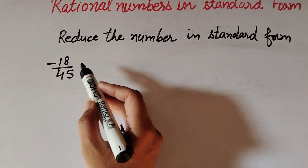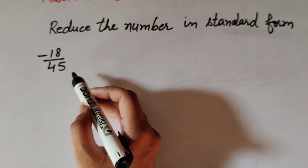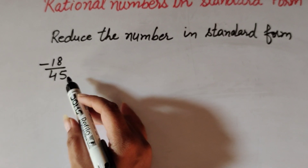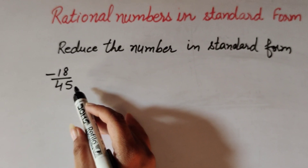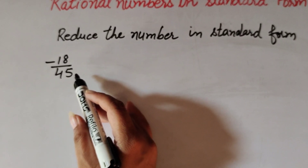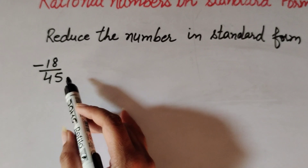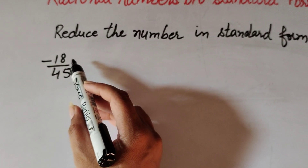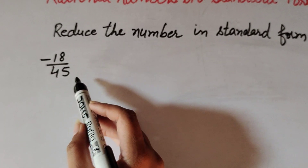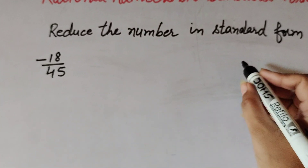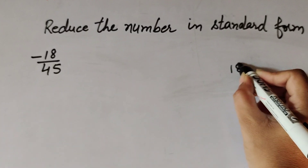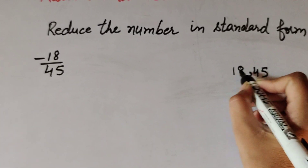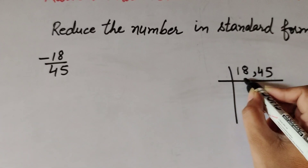Let's take one more example. We have the number -18/45. We reduce this number to its standard form. To do so, we divide its numerator and denominator by the HCF. So we find the HCF of 18 and 45 using prime factorization.